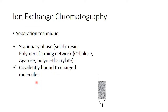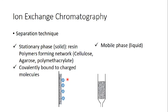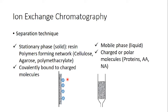The important thing is that on this resin there should be charged molecules — covalently bound charged molecules. In ion exchange chromatography, charge is very important because it depends mainly on charge. The mobile phase is a liquid holding our sample, and in the sample there should also be charged or polar molecules like proteins, amino acids, or nucleic acids. So ion exchange chromatography is all about charge.